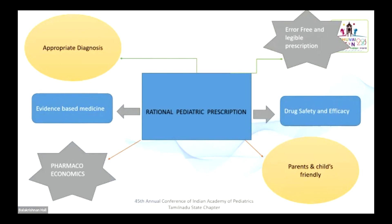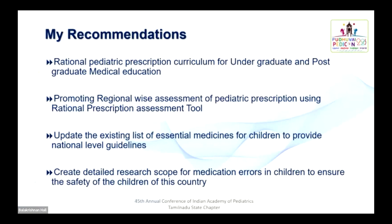My recommendations from this talk: we must have a rational pediatric prescription curriculum for undergraduate and postgraduate medical education. We should promote region-wise assessment of pediatric prescription using various rational prescription tools all over the country. We need an updated list of essential medicines for children to provide national-level guidelines by regulatory bodies. We should create detailed research scope for medication errors occurring in children to ensure the safety of children of this country. Thank you for patient listening.